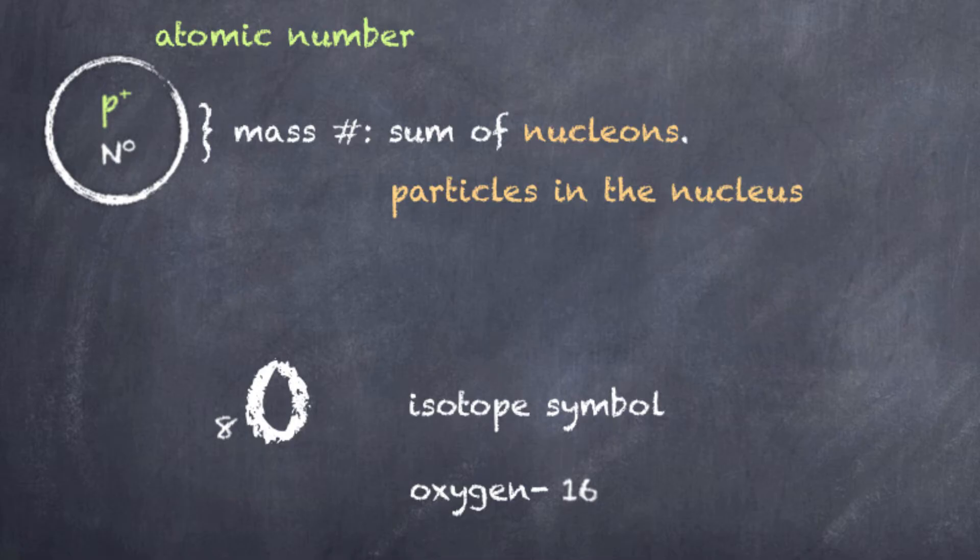Now, we do have other versions of oxygen, one of which has nine neutrons in the nucleus, and so its total number of nucleons is 17. So, we refer to this particular isotope of oxygen as oxygen-17. So, these are different versions of these particular isotopes.